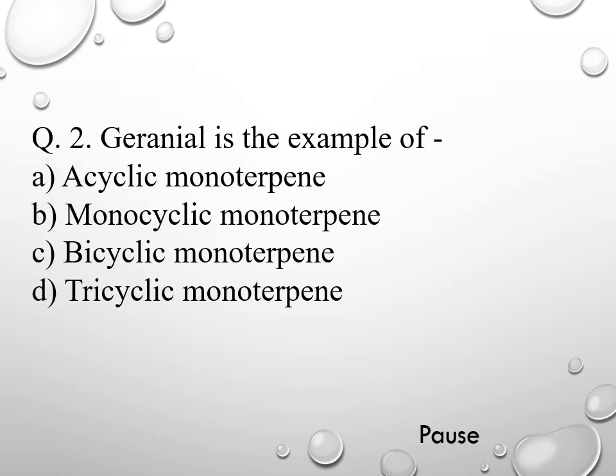Question 2. Geraniol is the example of: option A acyclic monoterpene, option B monocyclic monoterpene, option C bicyclic monoterpene, and option D tricyclic monoterpene. The right answer is acyclic monoterpene.